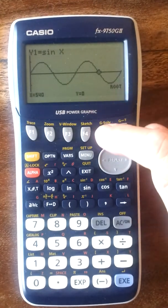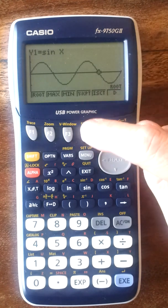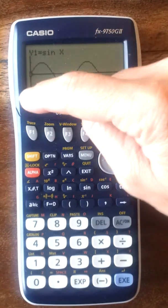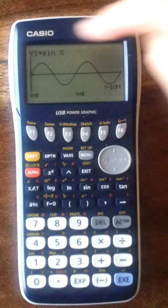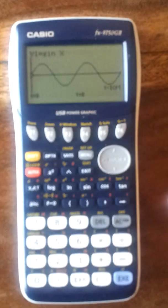Let's go to G-solve again and have a look at something else. What about the y-intercept? So that's F4. And as you can see, x equals 0, y equals 0, which it is. The sine curve starts at 0, 0.